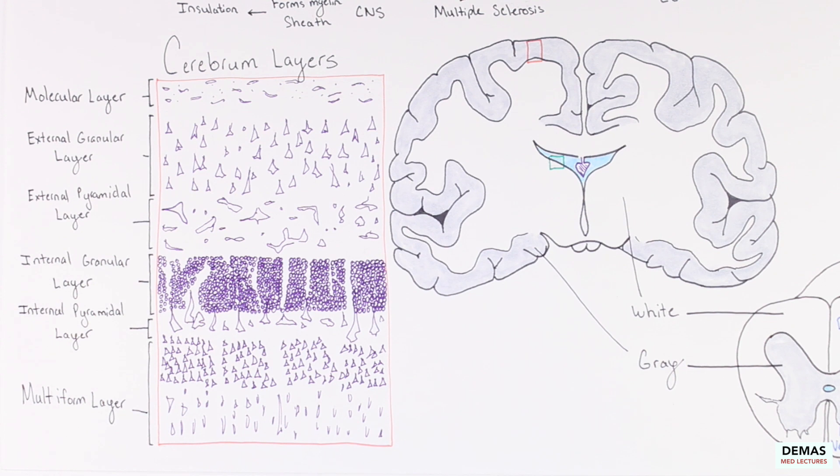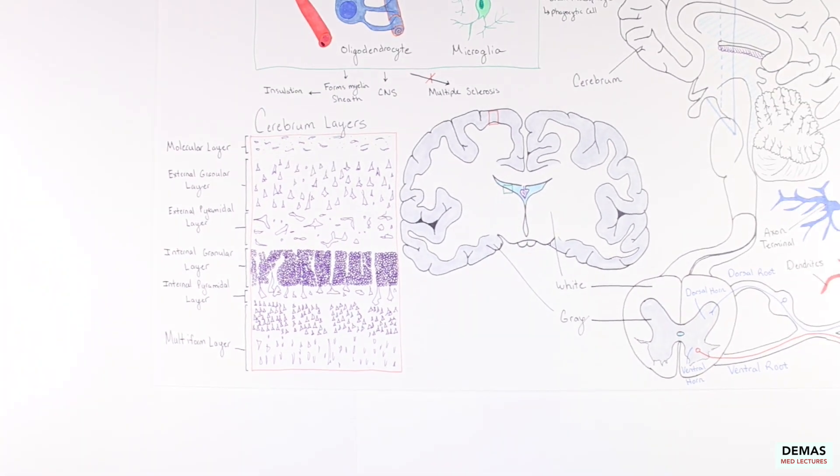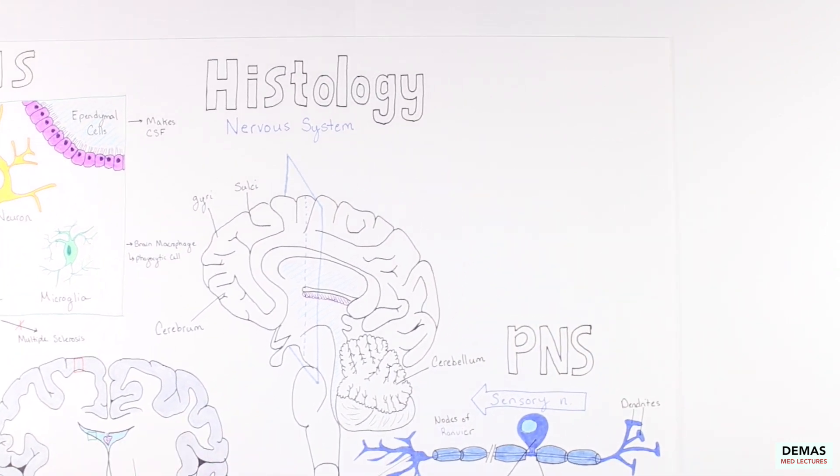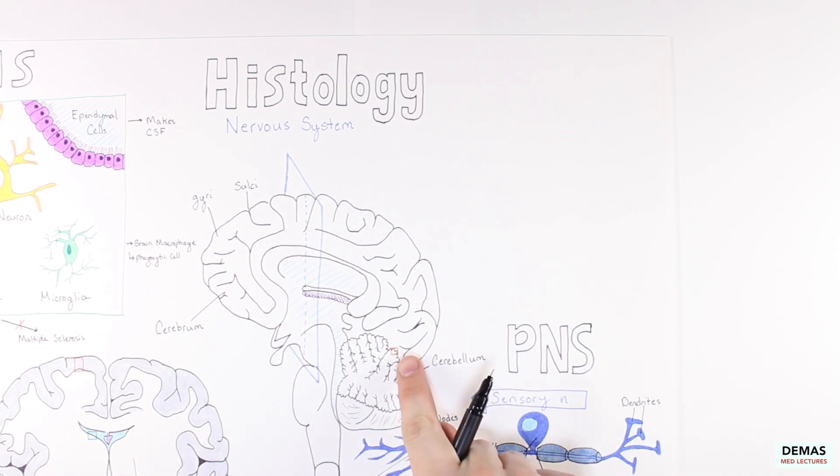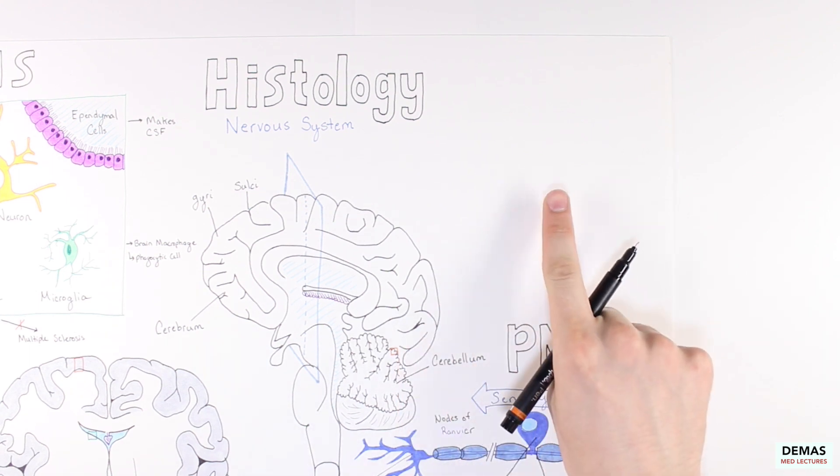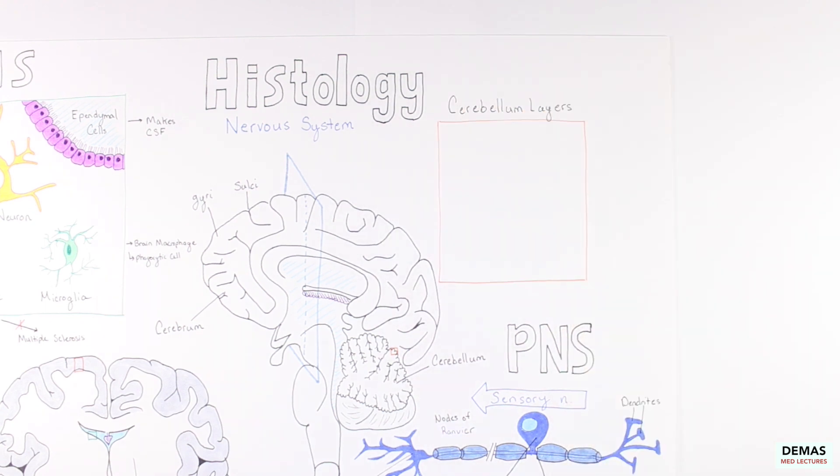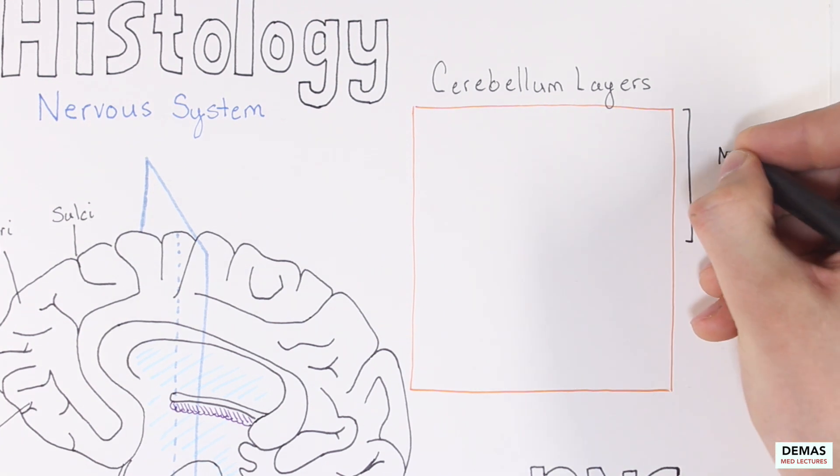The major takeaway for this particular diagram is the order of the layers. I wouldn't worry about the type of neurons or the shape and structure. Next we're going to take a look at the cerebellar cortex, which consists of three layers of cells. We're going to go ahead and zoom in on that portion of the cerebellar cortex. Now I'm going to go ahead and insert an H&E stained slide of the cerebellar cortex.